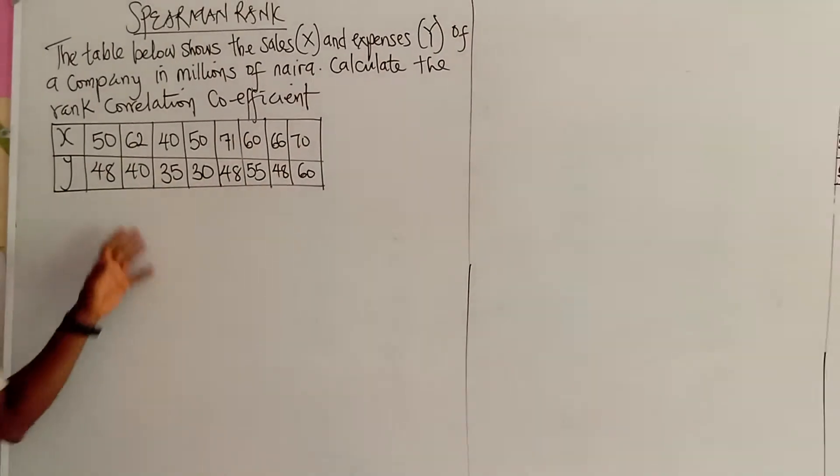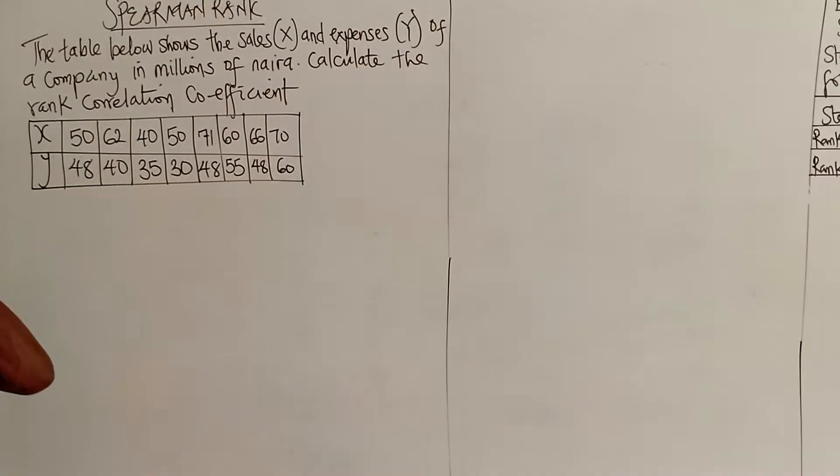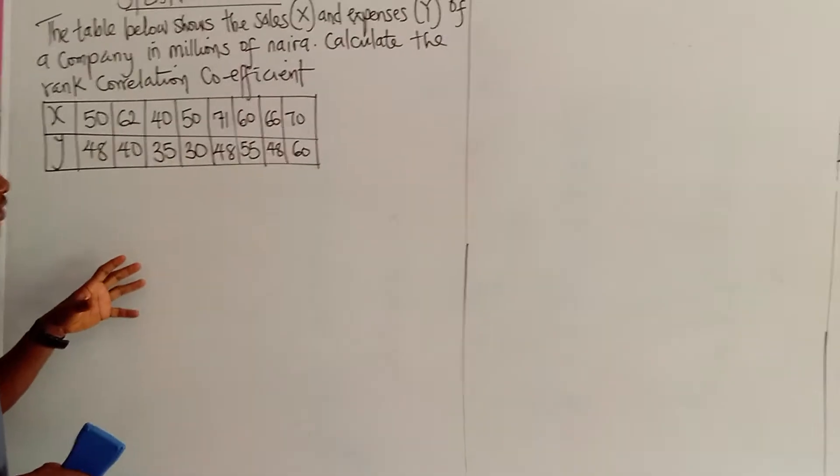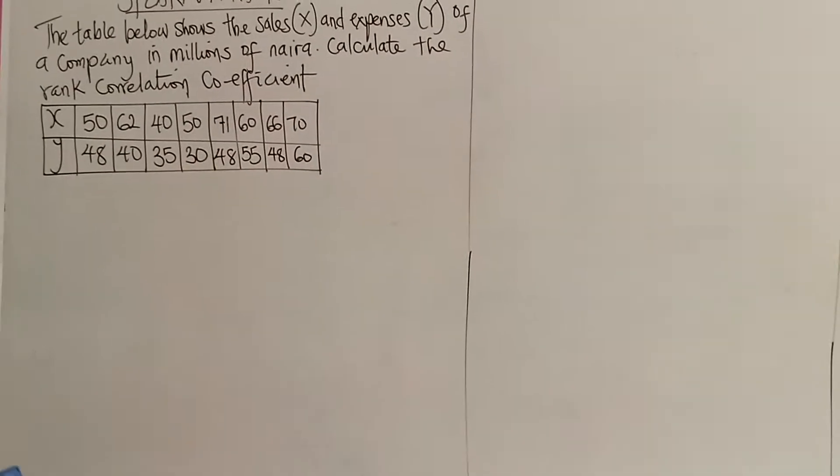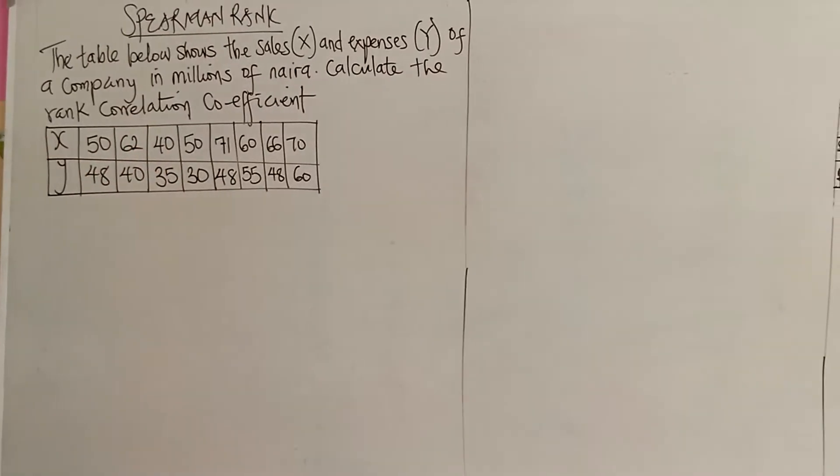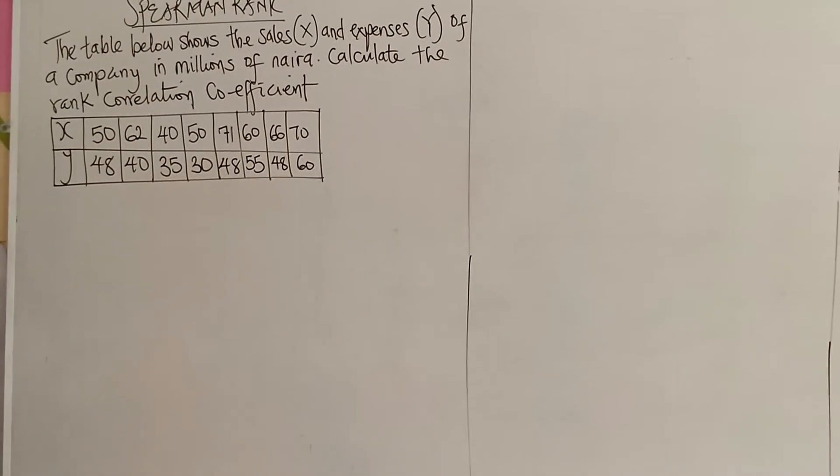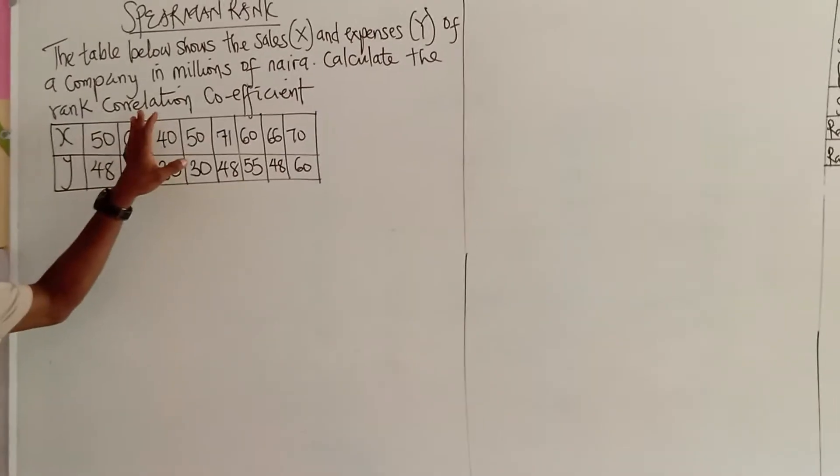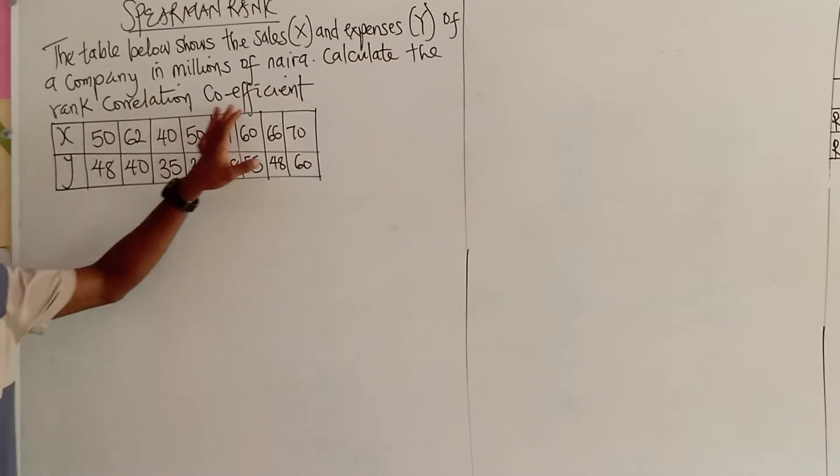Now, let's go straight to our Spearman calculation. Now, because of time, we are going to be very fast, and just follow me and you will get what we're trying to do. Now, here, the table shows the sales X and expenses Y of a company in millions of Naira. Now, we are asked to calculate a rank correlation coefficient.